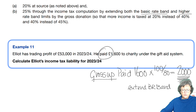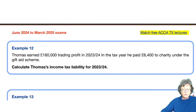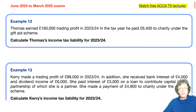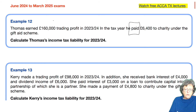Now let's look at example 12, where Thomas earned £160,000 of trading profits in 2023/24, and in the year he paid £6,400 to a charity. We're going to have to gross that up to see what's going to happen. We can see that he is an additional rate taxpayer.